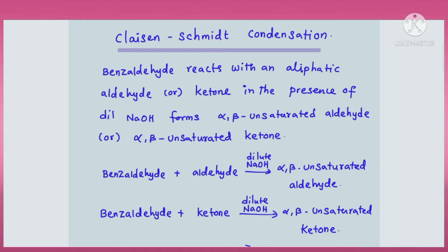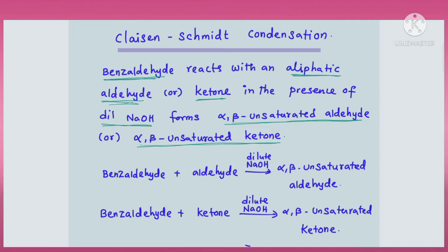Claisen-Schmidt condensation is also simply called as the Claisen reaction. In this reaction, benzaldehyde, an aromatic aldehyde, reacts with an aliphatic aldehyde or aliphatic ketone in the presence of a dilute base, forming either an alpha-beta unsaturated aldehyde or an alpha-beta unsaturated ketone.